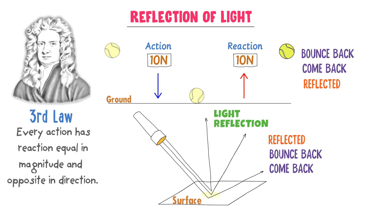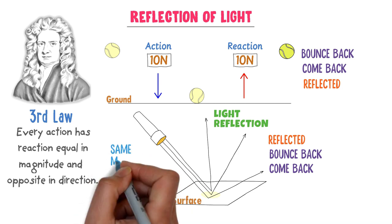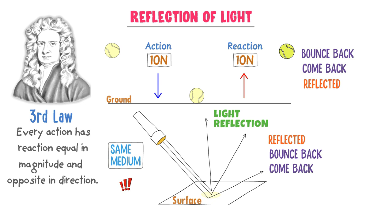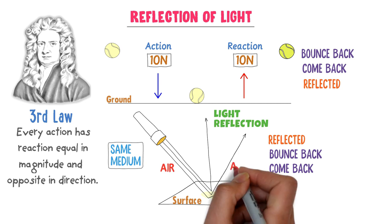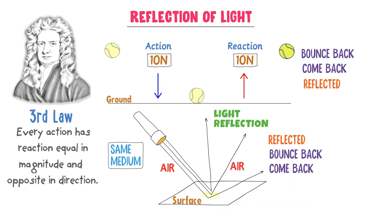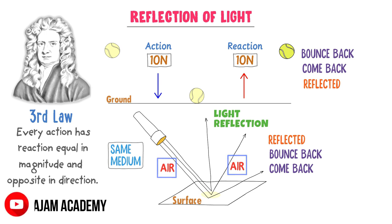The coming back or bounce back of the light ray after hitting any surface is called reflection of light. You must also learn the basic principle of reflection in the same medium, which many students do not understand. It means that light is traveling in the air and reflecting in the air after hitting the ground — the ray of light before and after reflection is in the air. This is the fundamental rule of reflection.